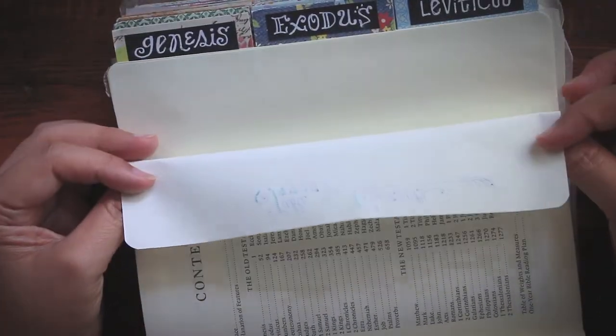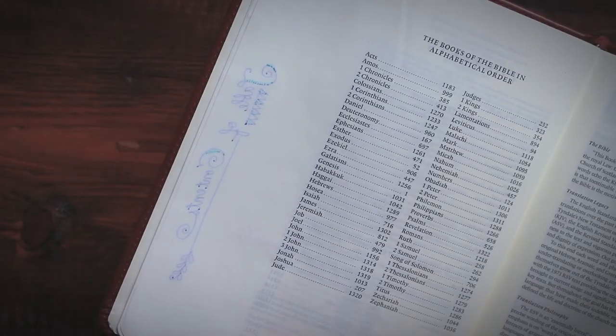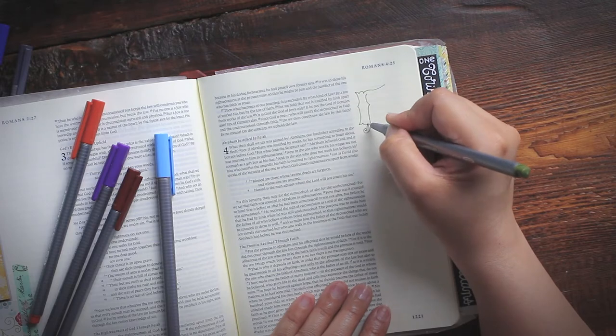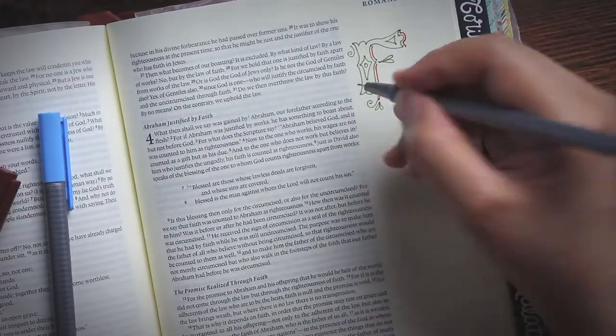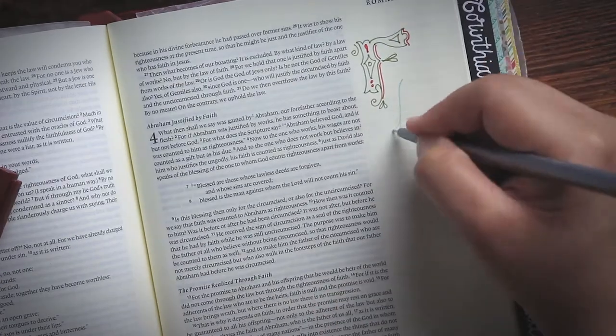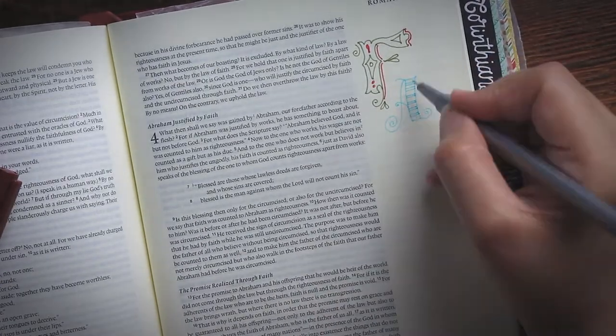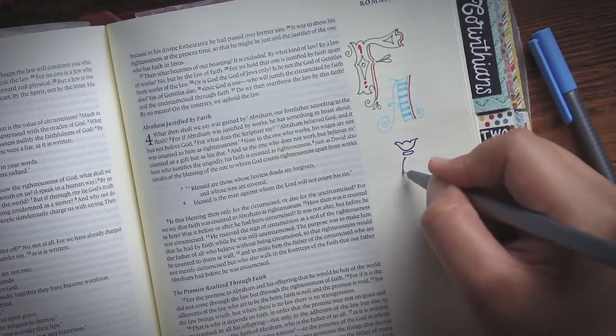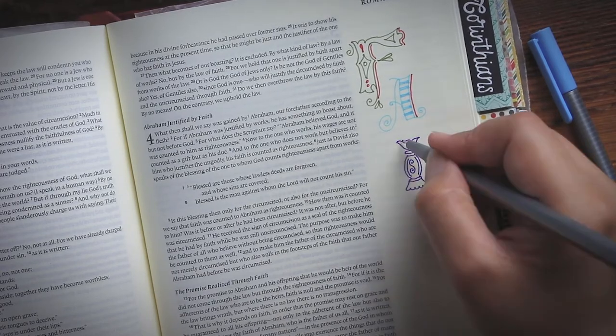Now as you can see, Stabilo failed miserably. The bleed through is quite pronounced, and to think I wasn't even pressing down hard on the Bible. How about Staedtler? Is it any better? By the way, while you're waiting for the results of this bleed test, let me add something.